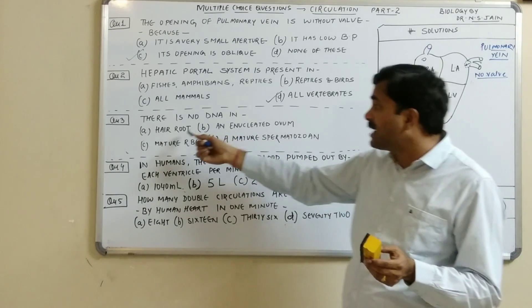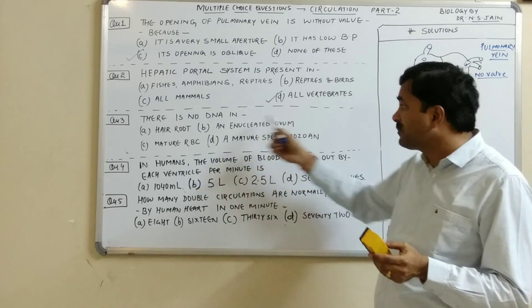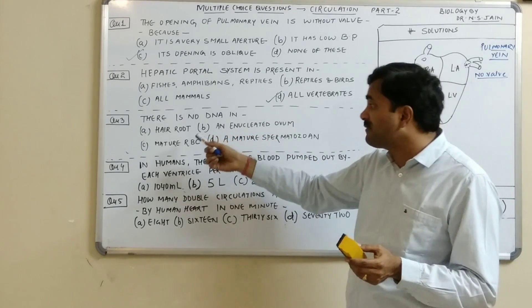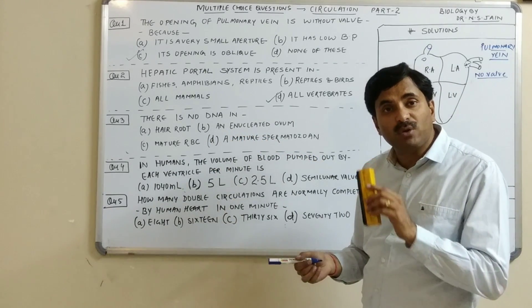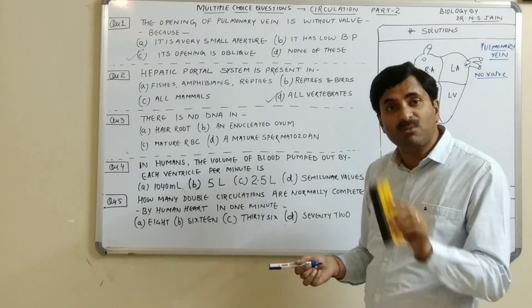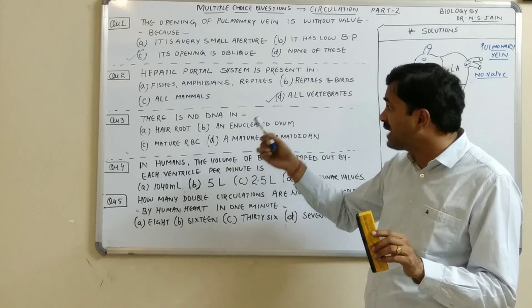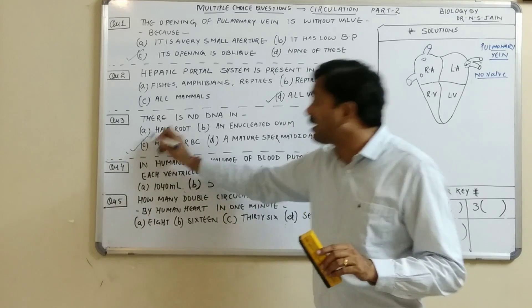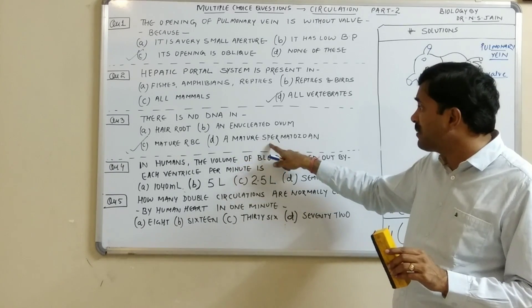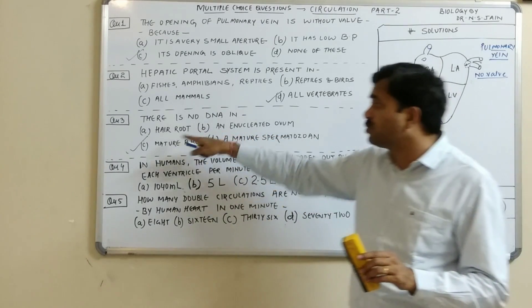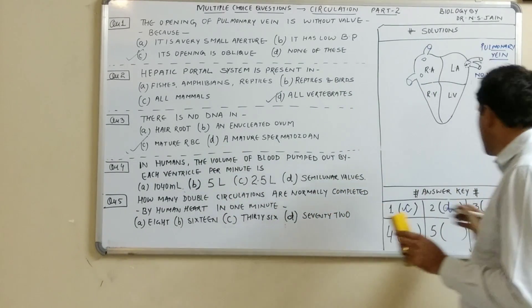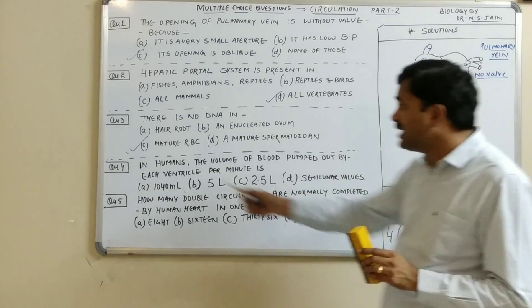Question number three: there is no DNA in — hair root, enucleated ovum, mature RBC, or mature spermatozoon? We know that a mature RBC is devoid of a nucleus and all cell organelles; it only consists of hemoglobin. Therefore, mature RBC has no DNA, while a mature spermatozoon, enucleated ovum, and hair root all have DNA. Question number three answer is C.